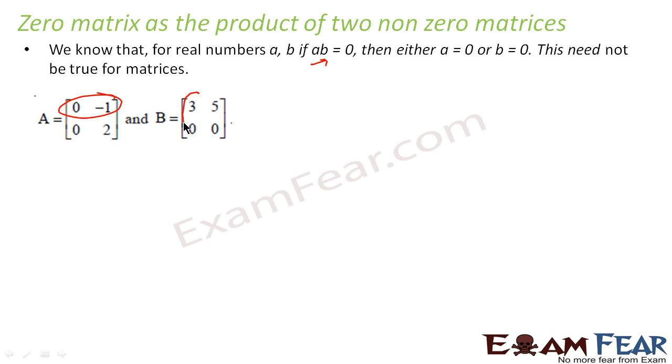So let's multiply this with this. Let's say A times B is: A equals 0, -1, 0, 2 and B equals 3, 5, 0, 0. So let's multiply this with this.